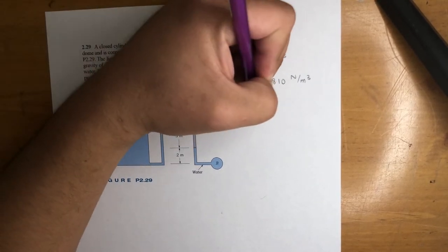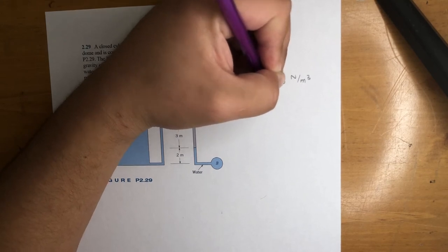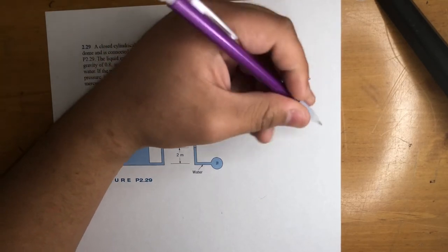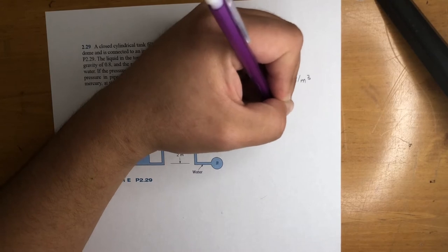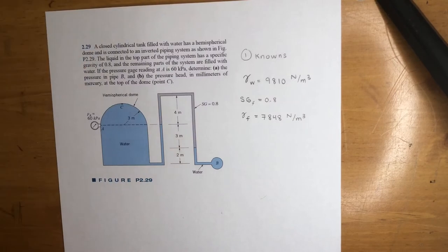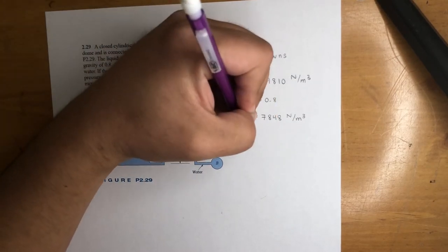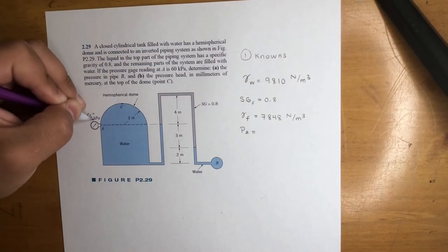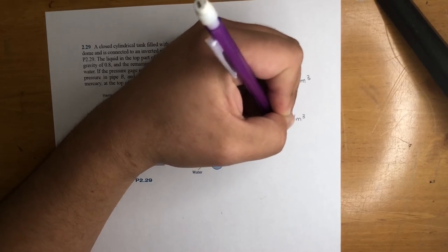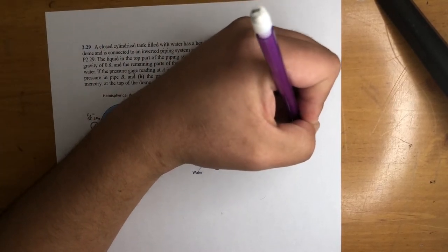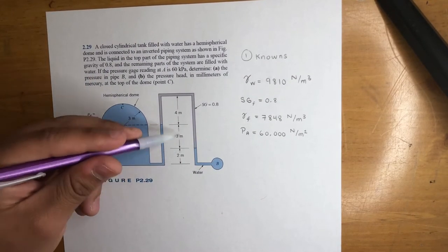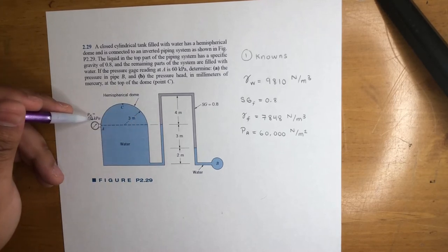To get the specific weight of the fluid, we multiply the water specific weight times the specific gravity, which gives us 7848 Newtons per meter cubed. The pressure at A is 60 kilopascals, which we'll write as 60,000 Newtons per meter squared. All the units line up, so we should be good to go.